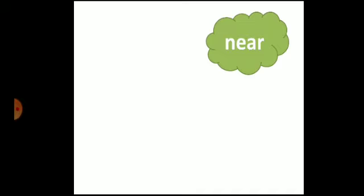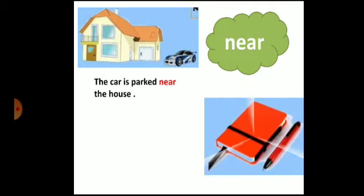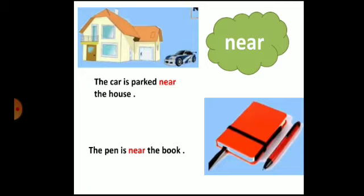Now let's see the next preposition: 'near'. Can you see where the car is? The car is parked near the house. So 'near' is the preposition. Now, where is the pen? The pen is near the book. The word 'near' shows the position of the pen, so 'near' is the preposition.